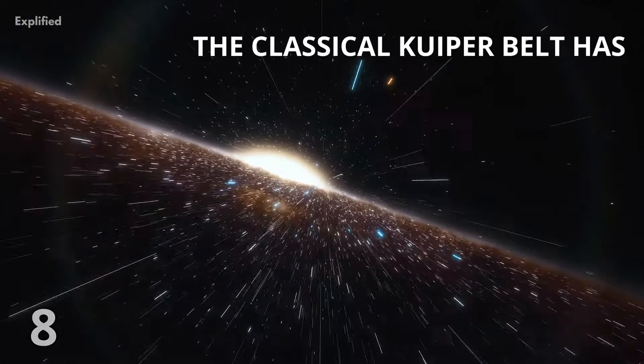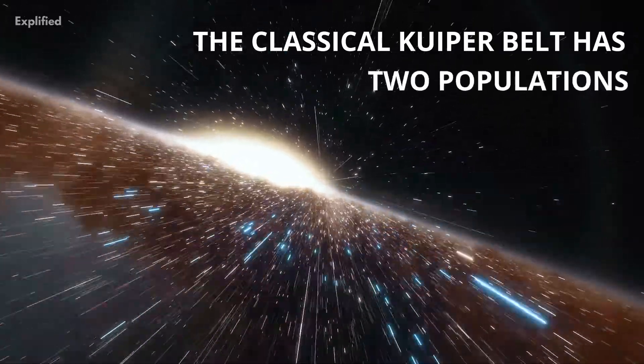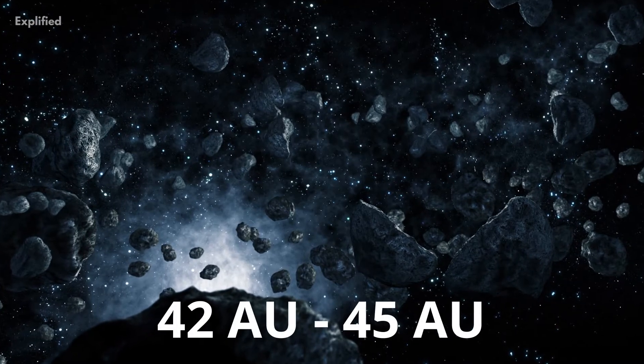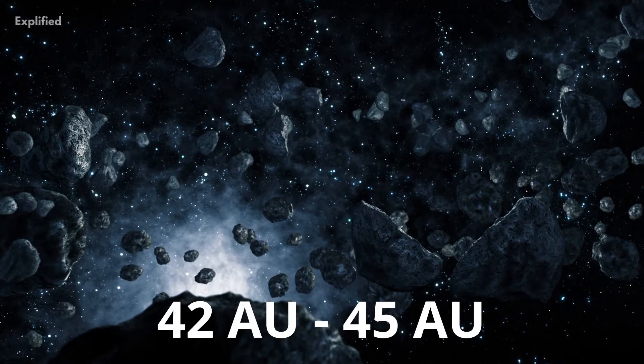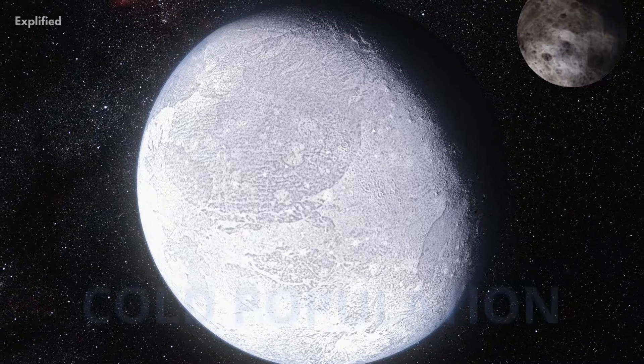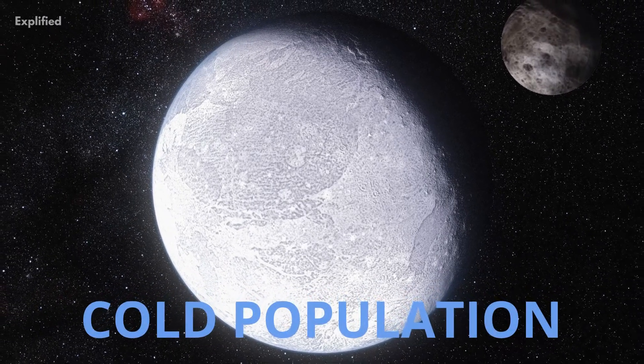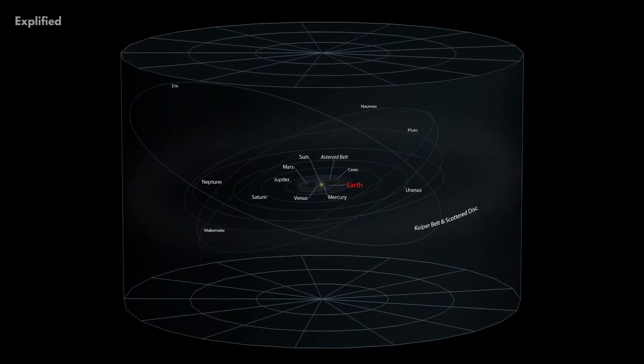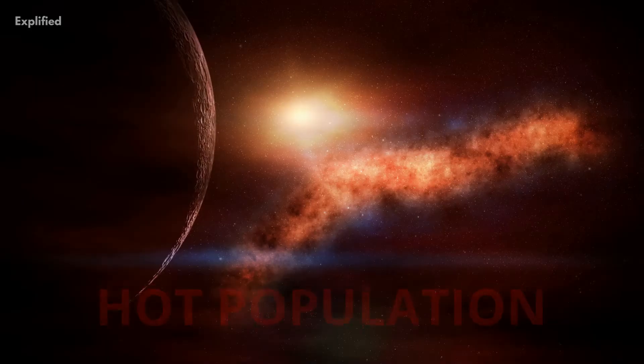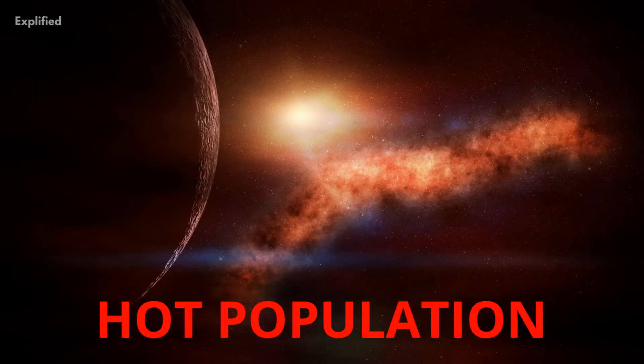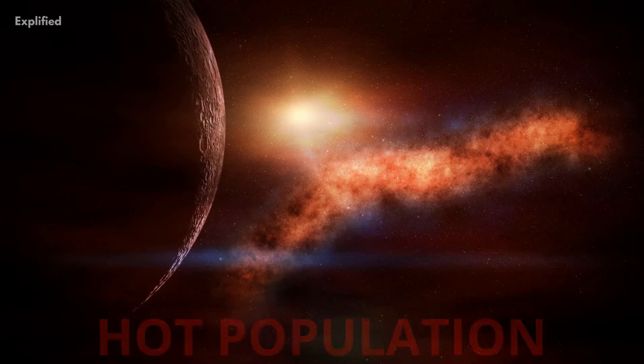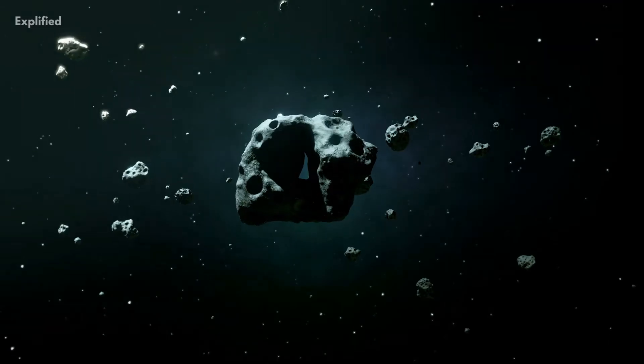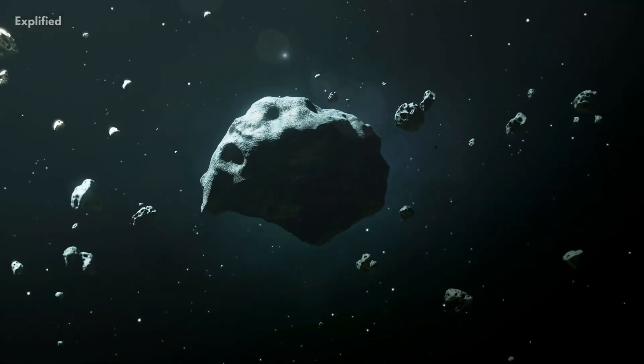Number 8. The classical Kuiper Belt has two distinct populations. The classical Kuiper Belt extends from 42 to 45 AUs and is populated by two distinct collection of objects. The first, called the cold population, has objects with nearly circular orbits which are generally inclined with respect to the ecliptic by less than 10 degrees. The second being known as the hot population, consists of objects that have orbits that can be inclined by as much as 30 degrees, or sometimes more. These names, however, have no relation with their surface temperatures.